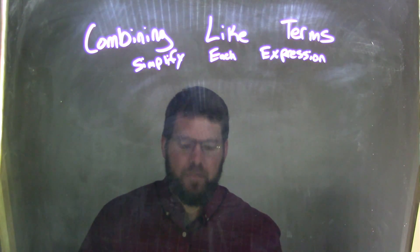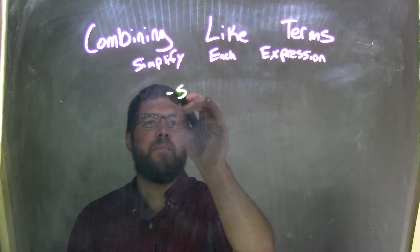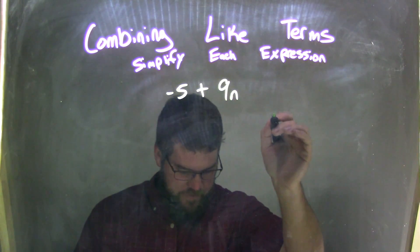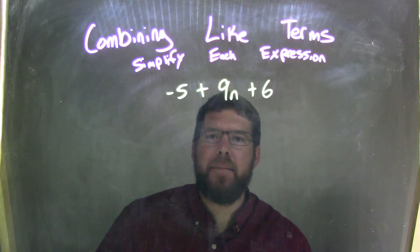So, if I was given this expression, negative 5 plus 9n plus 6, and I want to combine our like terms.